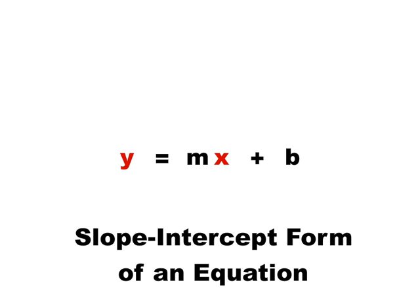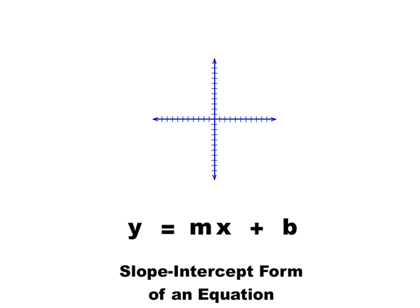Any equation in two non-exponential variables can be written in this form. Let's try it out. Here's a graph. Here's the equation. Like I said, y equals mx plus b is the slope-intercept form of a line.